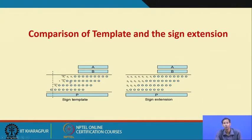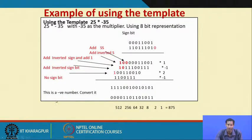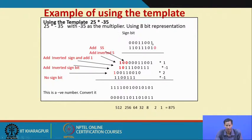When optimizing, the functionality must always remain the same — that is the main principle. Using the template method, we can reduce the number of full adder cells compared to the naive sign extension method while keeping the functionality intact. Now let's take the example of 25 multiplied by minus 35. 25 is represented as 00011001 in 8-bit, and minus 35 is represented in 8-bit 2's complement.